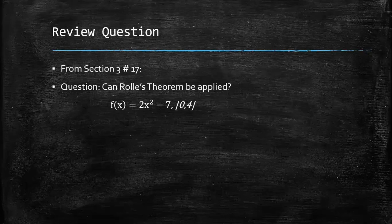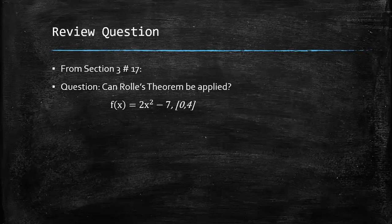And then, finally, the review question. I pose to you from section 3, number 17: Can Rolle's theorem be applied in this situation? Given the equation f(x) is equal to 2x² - 7 on the interval [0, 4].